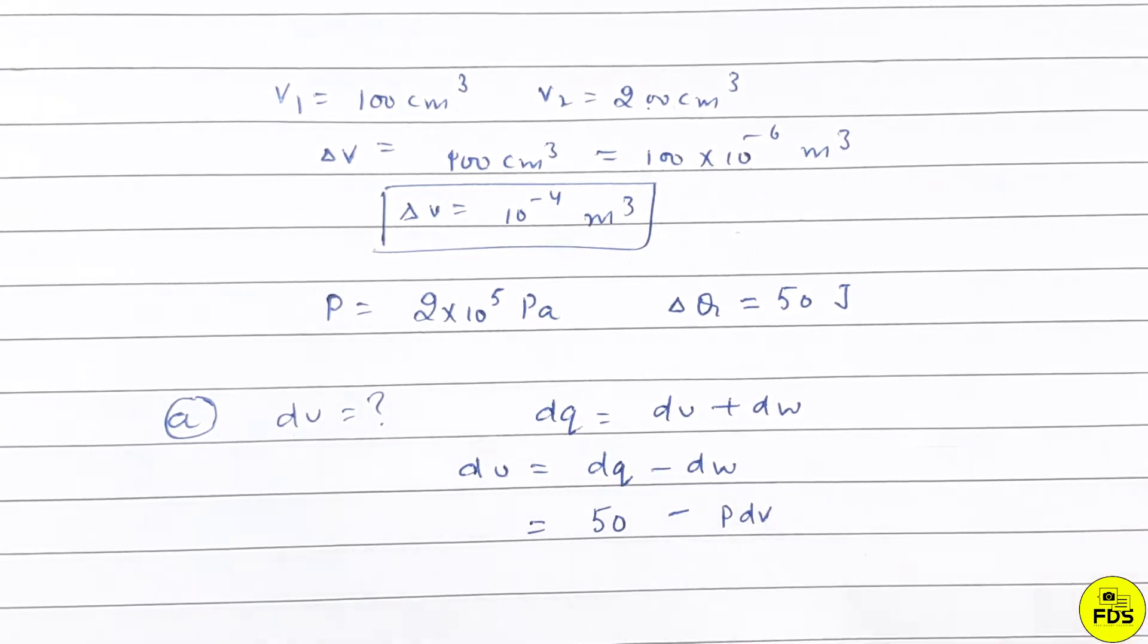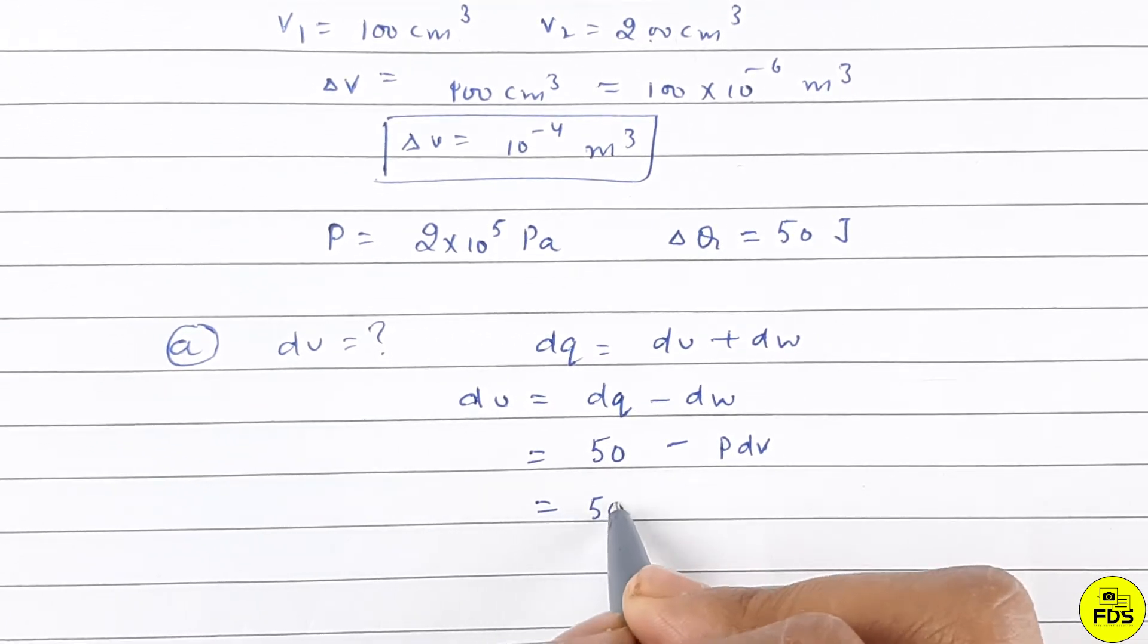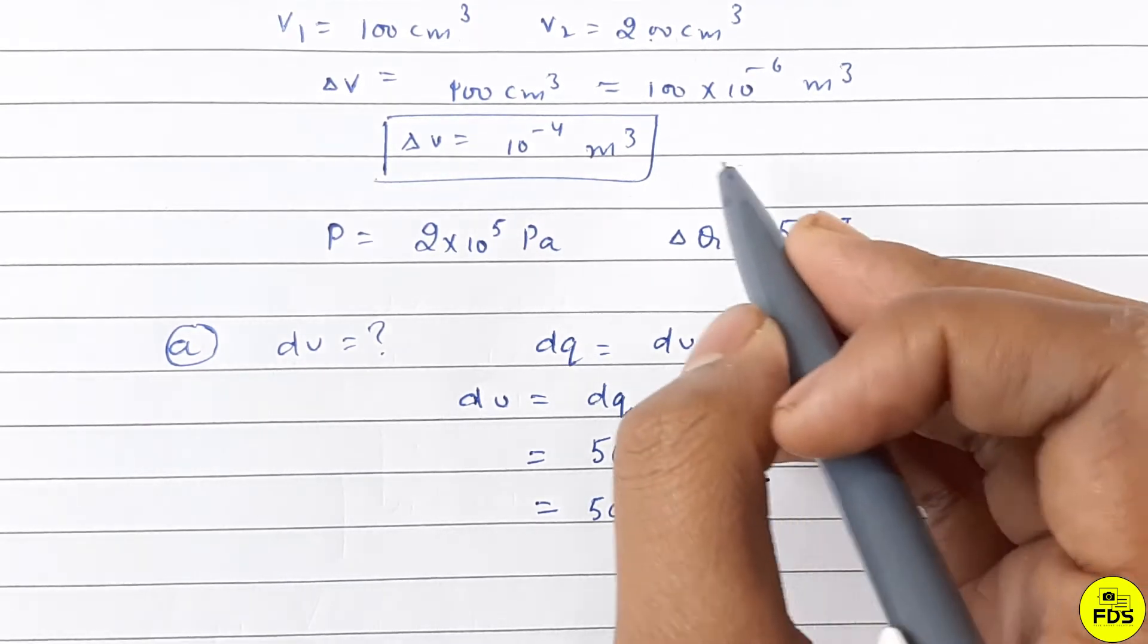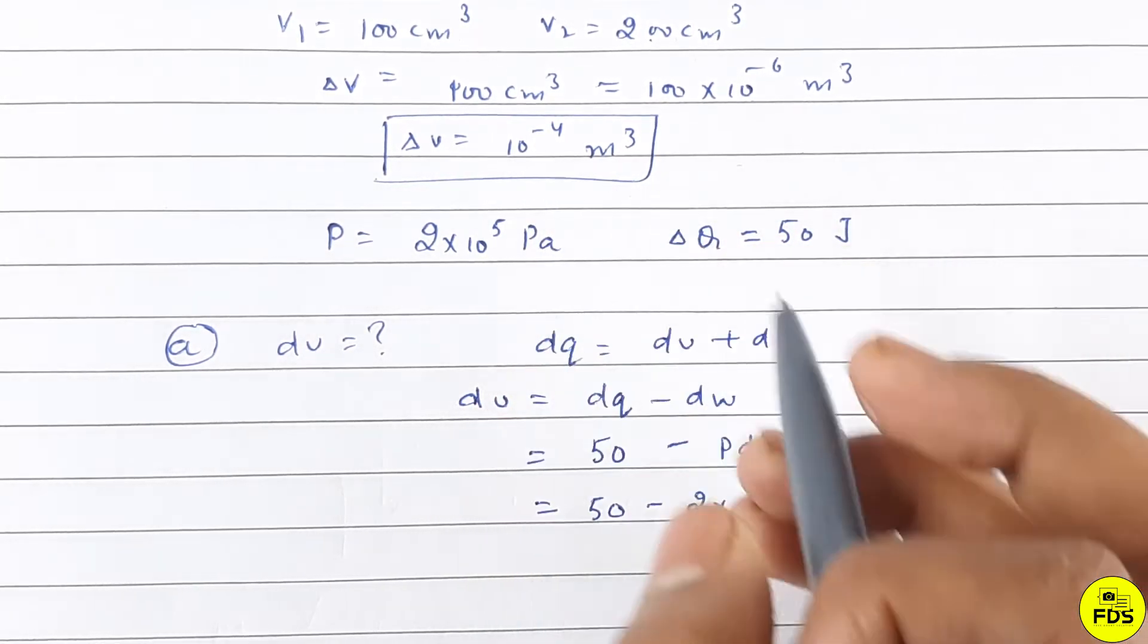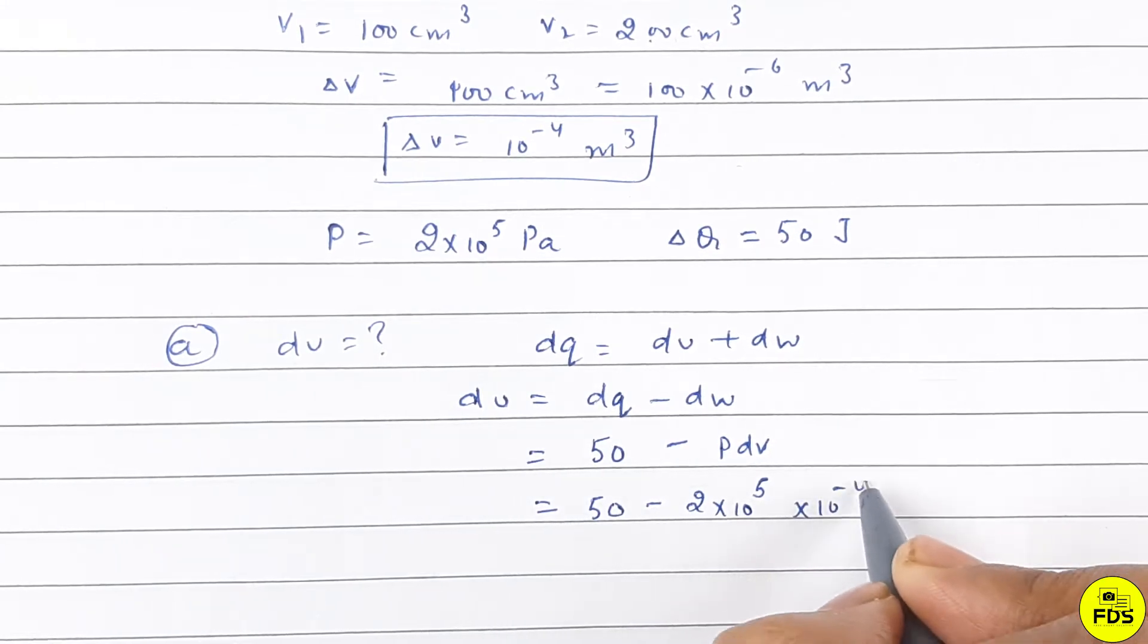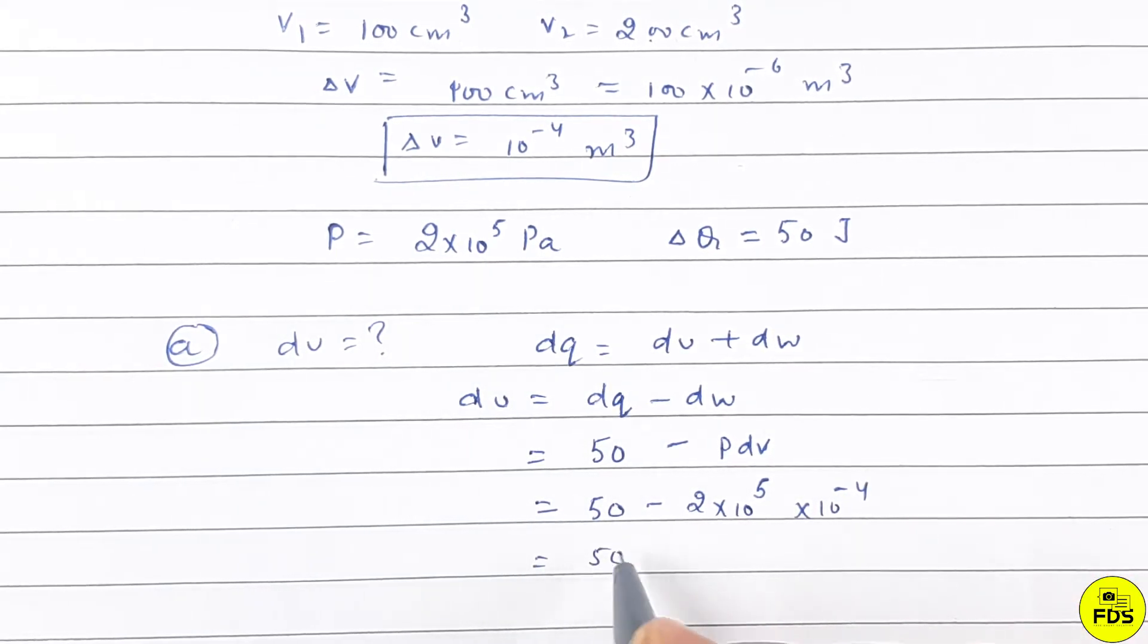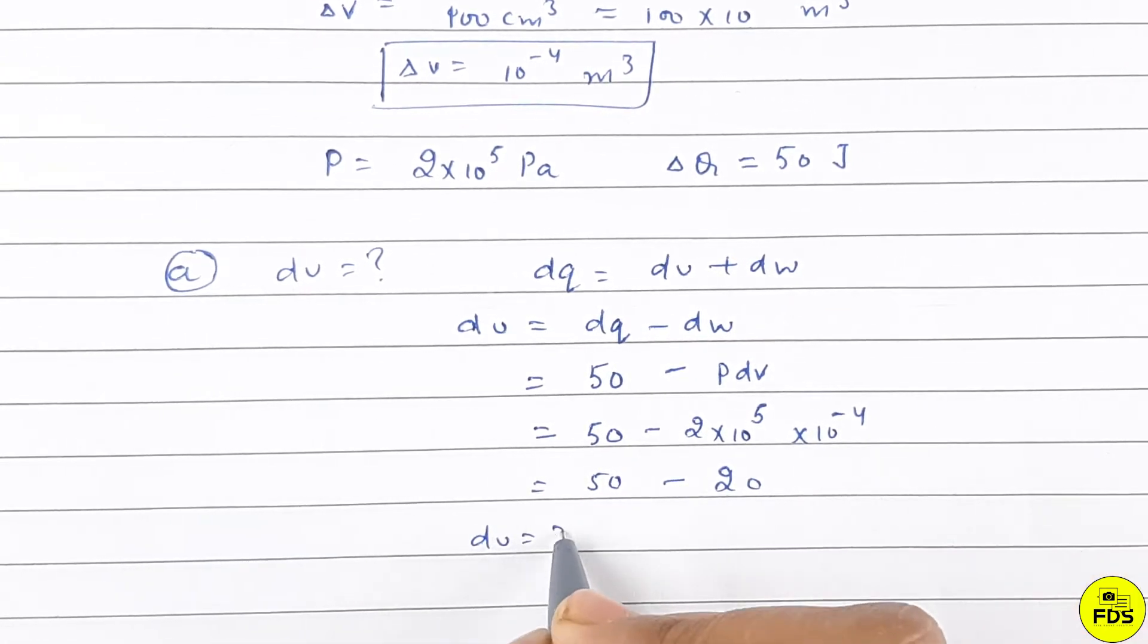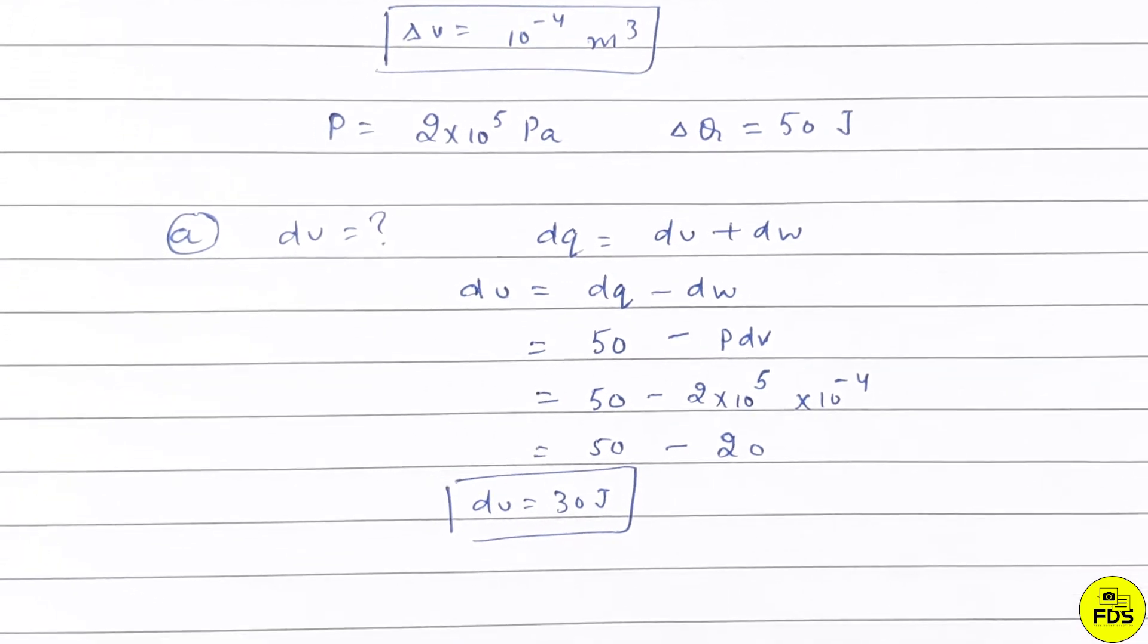Now dW is P dV. dQ is 50 J minus dW. Pressure is 2 into 10 raised to power 5 and dV is 10 raised to power minus 4, so dU is 50 minus 20, so dU is 30 Joule.